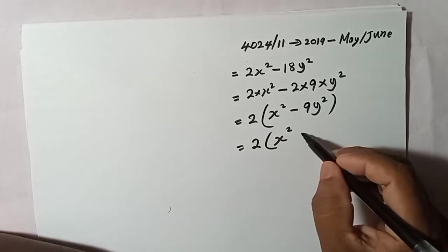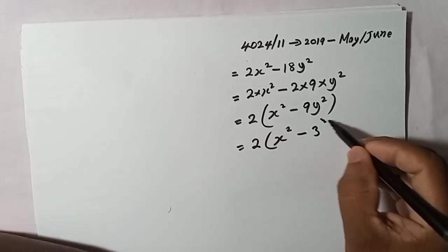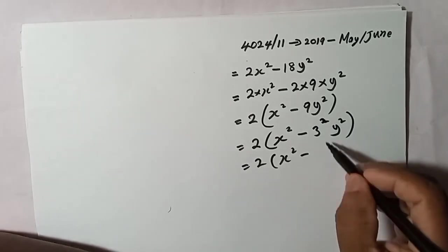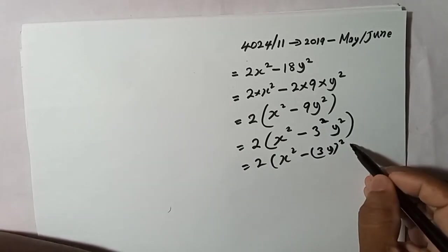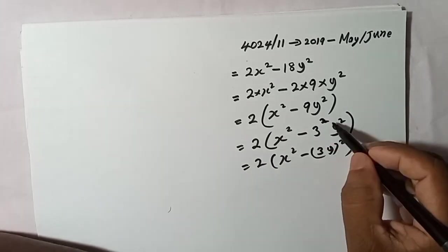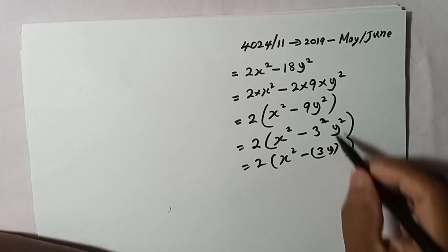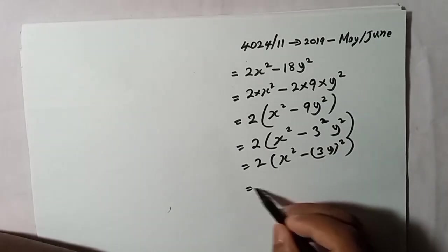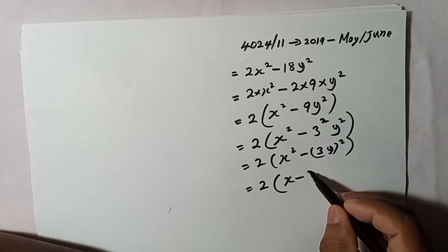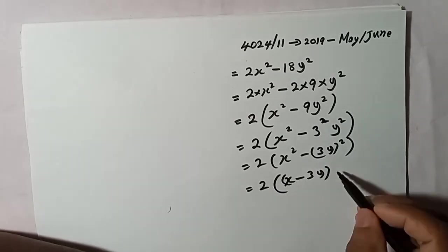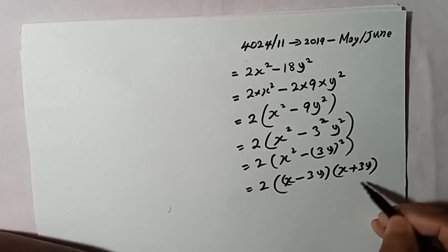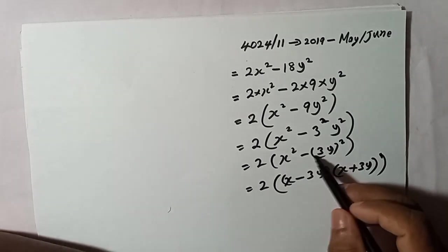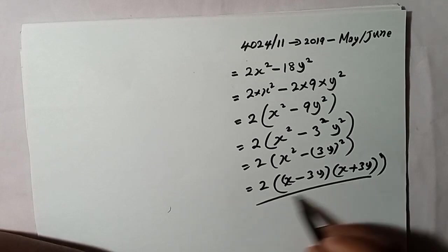Inside the bracket, x squared minus 9y squared is a difference of two squares. We can write 9y squared as 3y squared. So x squared minus 3y squared gives x minus 3y times x plus 3y. Therefore the fully factorized answer is 2 times x minus 3y times x plus 3y. You can use curly brackets to group them clearly. This is the final answer.